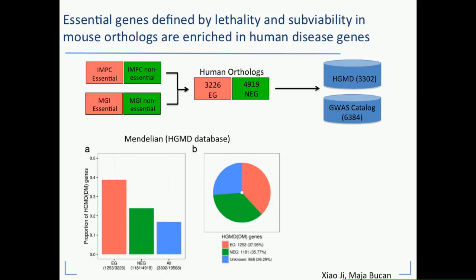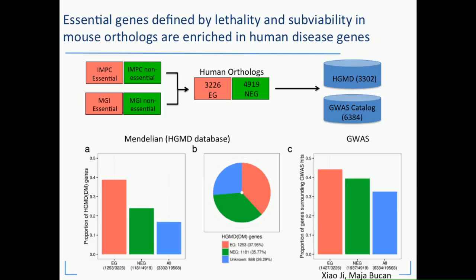Looking at all HGMD genes, a large proportion are actually essential — roughly equivalent to non-essential genes in count, but remember there are far fewer essential genes overall, and a decent percentage of HGMD genes remain of unknown essentiality, which is a great target for the IMPC in the future. What's really remarkable is that when we look at GWAS studies — the nearest genes surrounding GWAS hits — we see a similar enrichment. So this isn't just relevant to Mendelian disease; it applies to complex diseases as well, and identification of essential genes could be a useful tool moving forward.